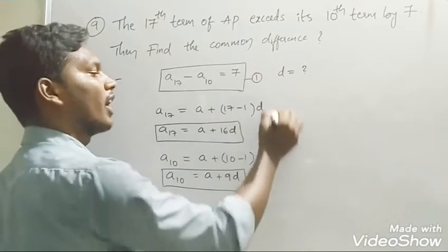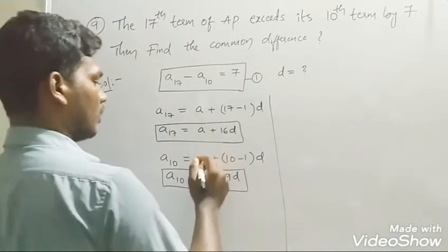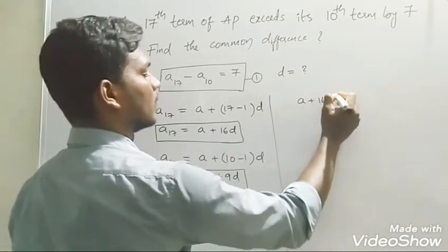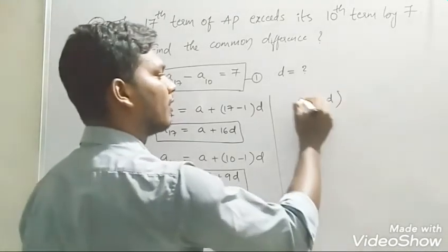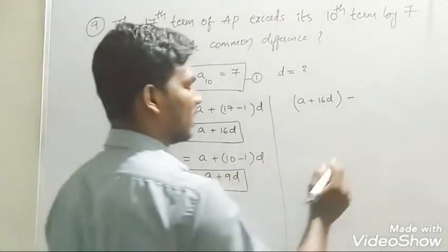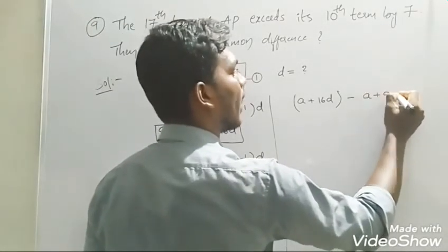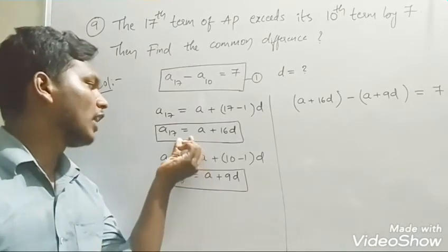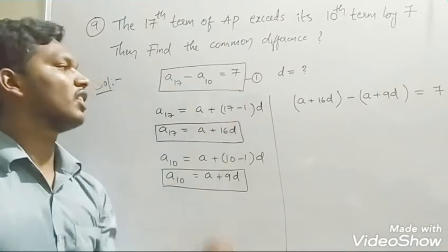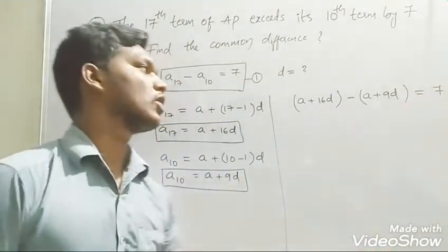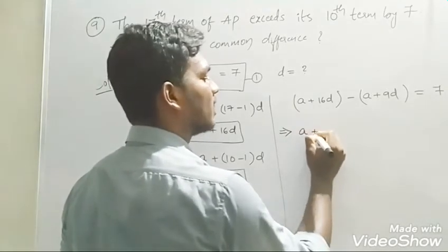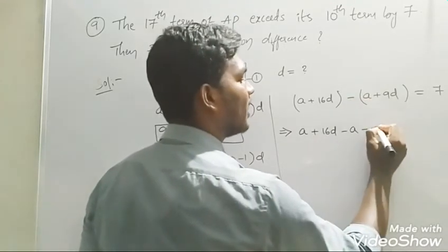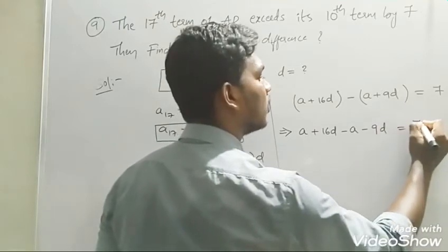Now substitute the values of a₁₇ and a₁₀ into equation 1, which is a₁₇ minus a₁₀ equals 7. After substituting: (a plus 16d) minus (a plus 9d) equals 7, which becomes a plus 16d minus a minus 9d equals 7.